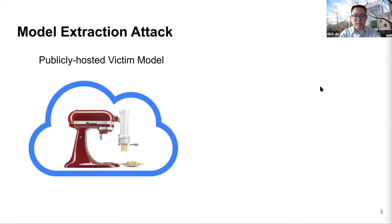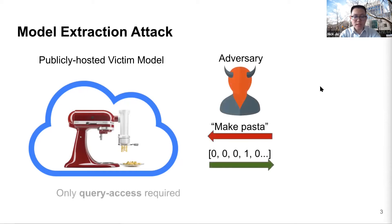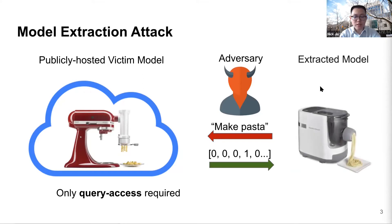Providers of online machine learning services usually do not reveal the exact parameters of their neural networks to users. Instead, they only allow the user to query the model and respond with the model's prediction. In this work, we assume the case where providers give the least information — only the hard label is given. However, the adversary can reverse engineer the model via this simple query interface by applying a model extraction attack. The adversary uses synthesized or unlabeled public data to bypass the need for exact training data, and uses the victim model as a labeling oracle, since its labeled inputs can be used to retrain an extracted model with similar performance.